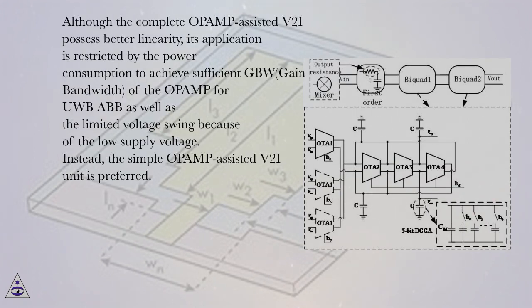Although the complete op-amp-assisted V2I possesses better linearity, its application is restricted by the power consumption to achieve sufficient GBW (gain bandwidth) of the op-amp for UWB ABB as well as the limited voltage swing because of the low supply voltage.